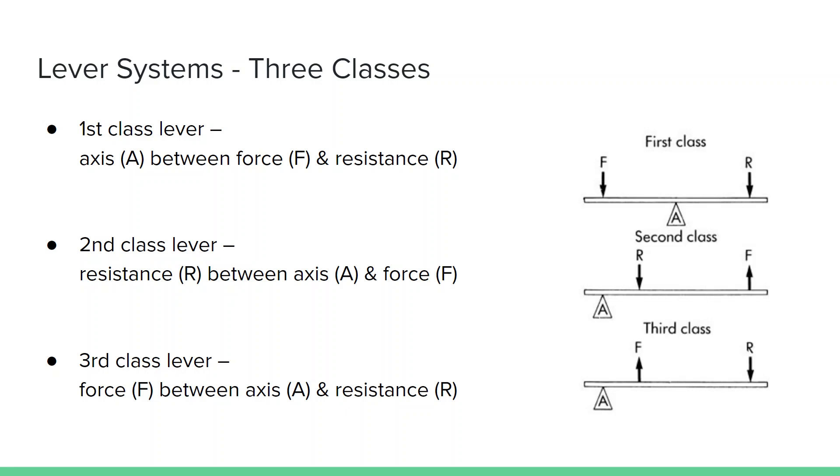The second class lever, the resistance is between the axis and the force. And the classic second class lever system is a wheelbarrow. So the wheels are the axis, the force is you lifting the handles of the wheelbarrow, and your big load is in between. This kind of lever system allows us to lift large resistance loads with a much smaller force. The third class lever system is when the force is closer to the axis than the resistance. Most of our joints are a third class lever system. And these are actually at a mechanical disadvantage. For whatever you're lifting, the resistance, you have to generate a large force to move that resistance. So we, in general, are at a mechanical disadvantage.